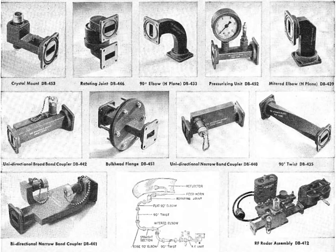Electromagnetic waveguides are analyzed by solving Maxwell's equations, or their reduced form, the electromagnetic wave equation, with boundary conditions determined by the properties of the materials and their interfaces. These equations have multiple solutions, or modes, which are eigenfunctions of the equation system. Each mode is characterized by a cut-off frequency below which the mode cannot exist in the guide. Waveguide propagation modes depend on the operating wavelength and polarization and the shape and size of the guide. The longitudinal mode of a waveguide is a particular standing wave pattern formed by waves confined in the cavity. The transverse modes are classified into different types.